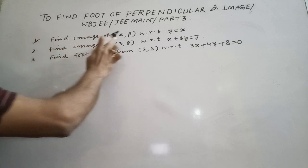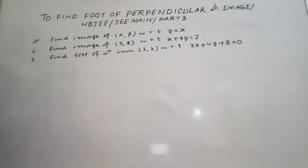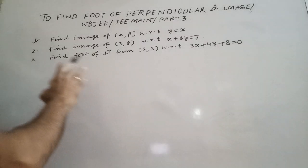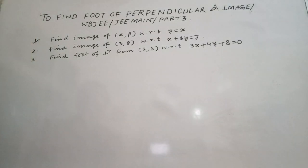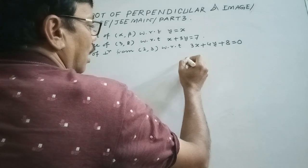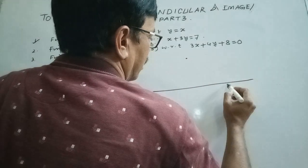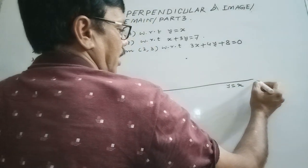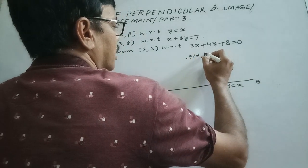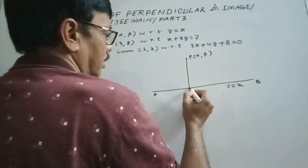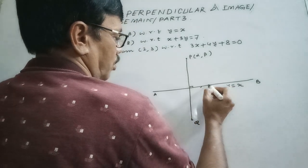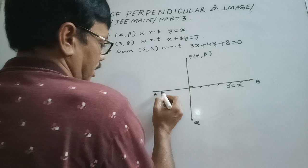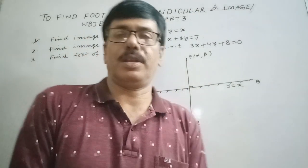Find the image of point (α, β) with respect to the line y = x. First we give a general proof, then in the second video I will discuss the shortcut technique. We take a graph figure. Suppose this is a line — y = x, that is AB. AB acts as a mirror. P(α, β) is a point, and you have to find the image of P with respect to the line. Suppose the image is Q.